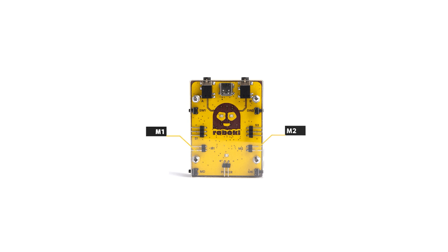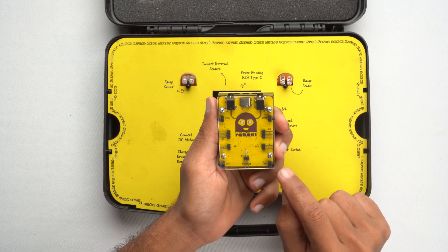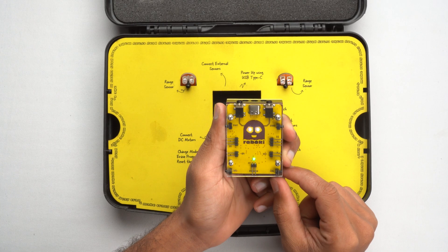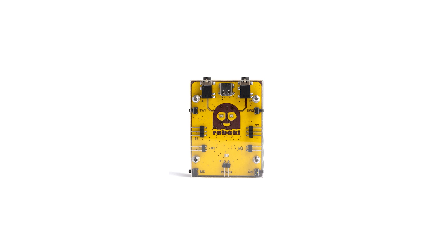This gives you the flexibility to choose the right motor for your project. At the bottom, there are two buttons. The one on the right is the power button. This button lets you turn the RoboKey on or off.